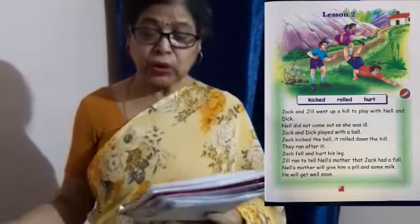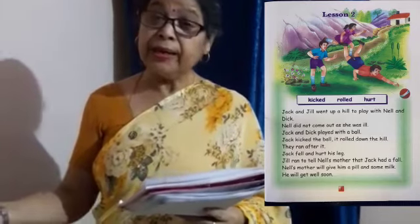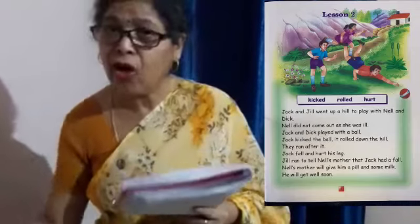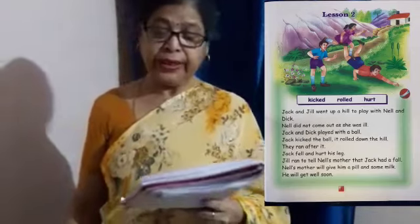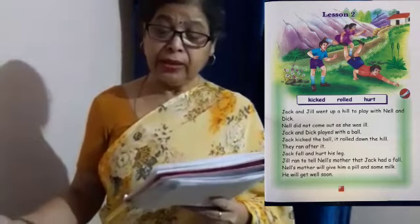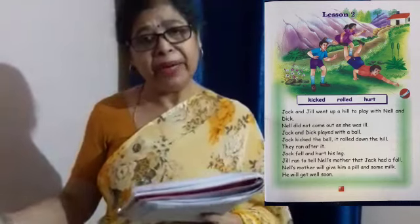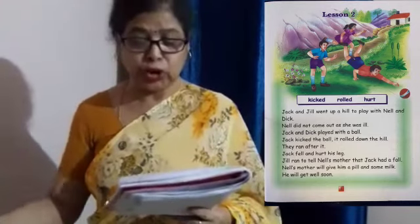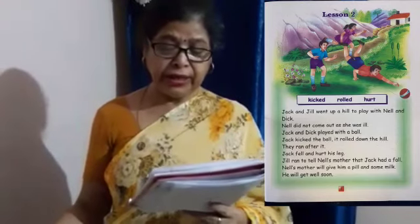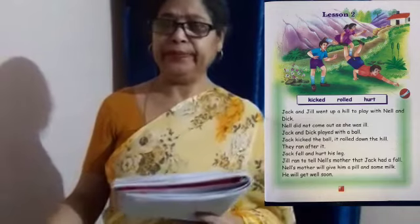Jill ran to tell Nell's mother that Jack had a fall — Jill chali gayi Nell ke mother ko batane. Jack gir gaya. Nell's mother will give him a pill — Nell ki mother use degi a pill. Pill kya hota hai? Medicine — tablet ya medicine hoti hai. And some milk — aur kuch doodh. He will get well soon — aur woh bilkul jaldi se theek ho jayega.